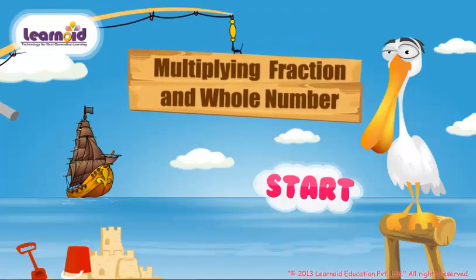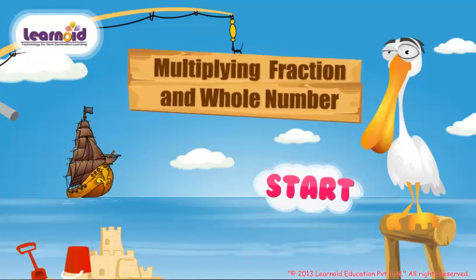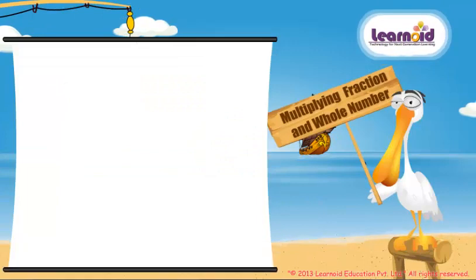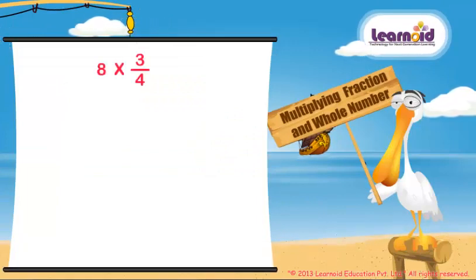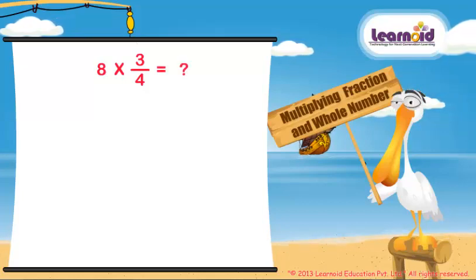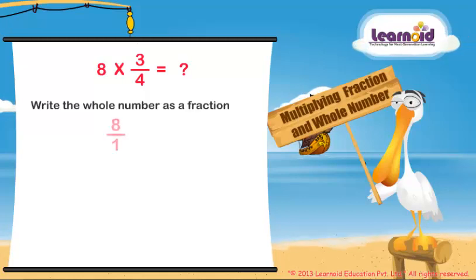Today we will learn how to multiply fractions and a whole number. We have to multiply 8, which is a whole number, and 3/4, which is a fraction. First, write the whole number as a fraction: 8/1 into 3/4.